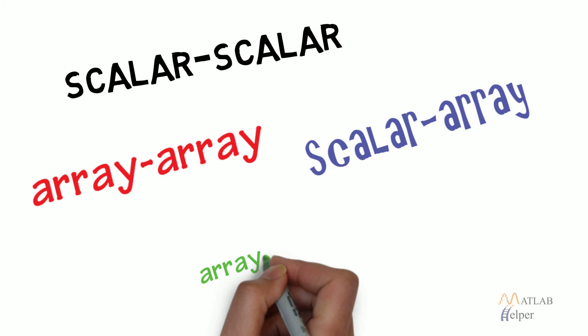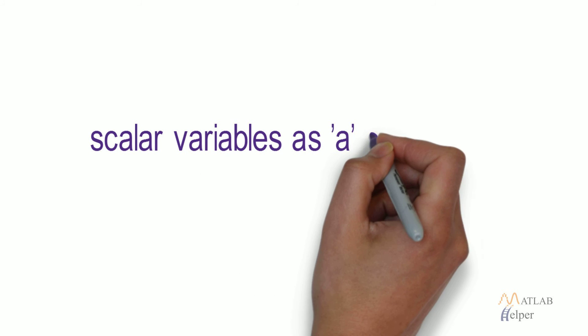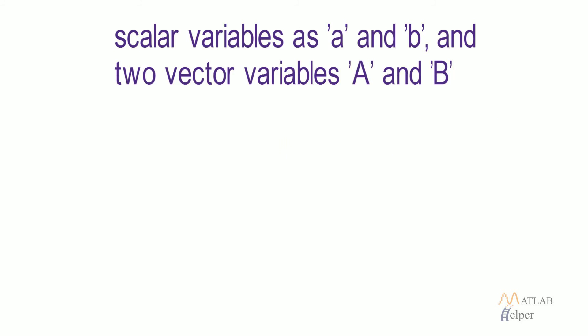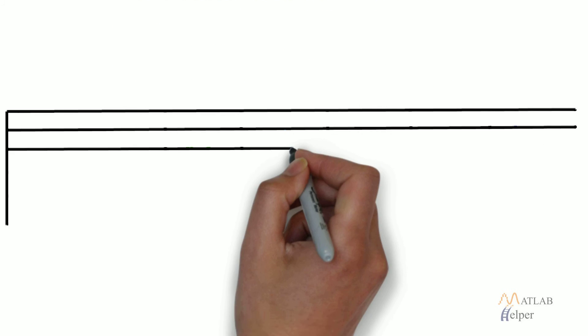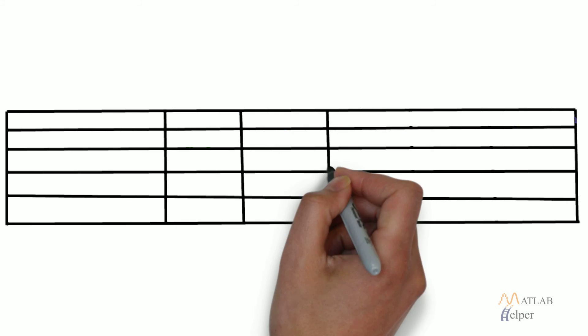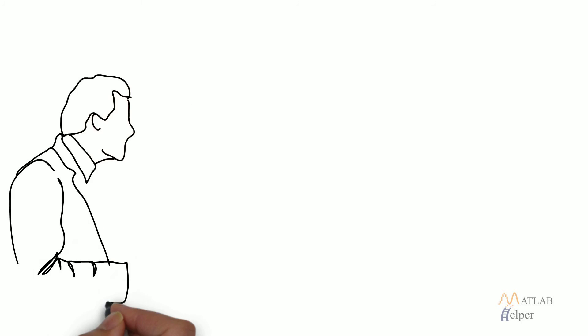Let us consider two variables as A and B and the two vector variables as capital A and B. An example usage of all these operations have been described in the table shown.